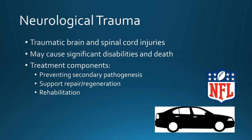Neurological trauma includes brain and spinal cord injuries, which may be caused by motor vehicle accidents, falls, sports injuries, or violence, and can result in significant disabilities or death. Around 1.7 million people in the U.S. sustain traumatic brain injuries each year, and around 52,000 of those usually die from them. Treatments include preventing secondary pathogenesis from the initial brain injury, as well as support for repairing and regenerating damaged tissue and rehabilitation. CT and MRI scans are used to observe the extent of tissue damage.